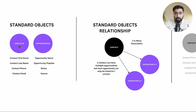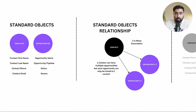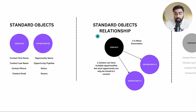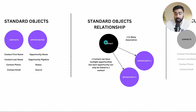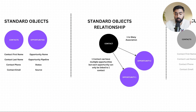Objects give you the ability to work with complex data structures and relationships, because there can be many contacts and each contact will have different custom fields. To group them better in a relational database, it is important to create an object. In Go High Level, one contact can have many opportunities — this is a one-to-many association. One contact can be tied to multiple opportunities, but each opportunity can only be linked to one contact.